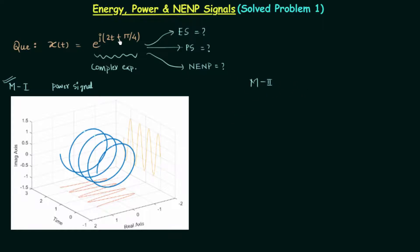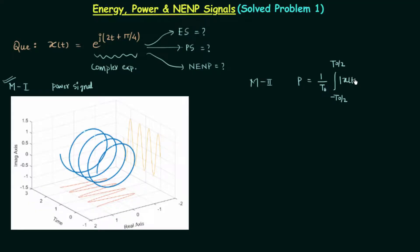Now we will see method number two, in which we calculate the average power P. The signal is periodic, as you can see from the waveform, so we will use the formula for average power of periodic signals. It is equal to (1/T₀) times the integral from −T₀/2 to T₀/2 of |x(t)|² dt, where T₀ is the fundamental time period.